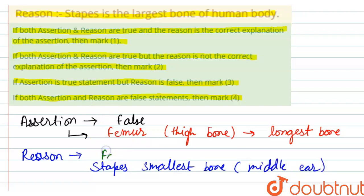So we can say that the correct answer will be option 4: if both assertion and reason are false statements, then mark four, because here both assertion and reason are false. Thank you.